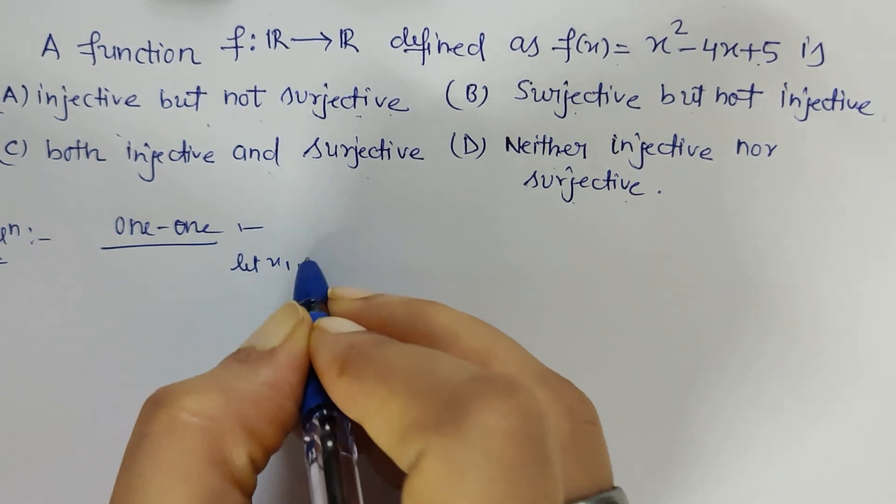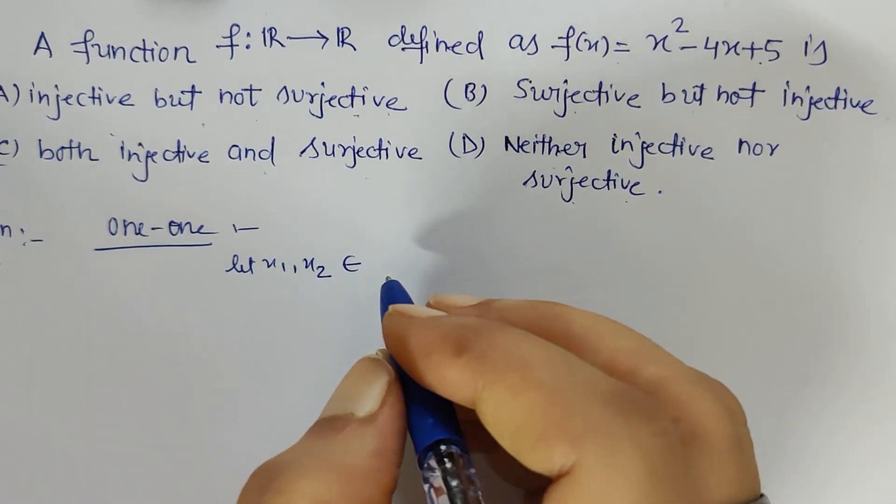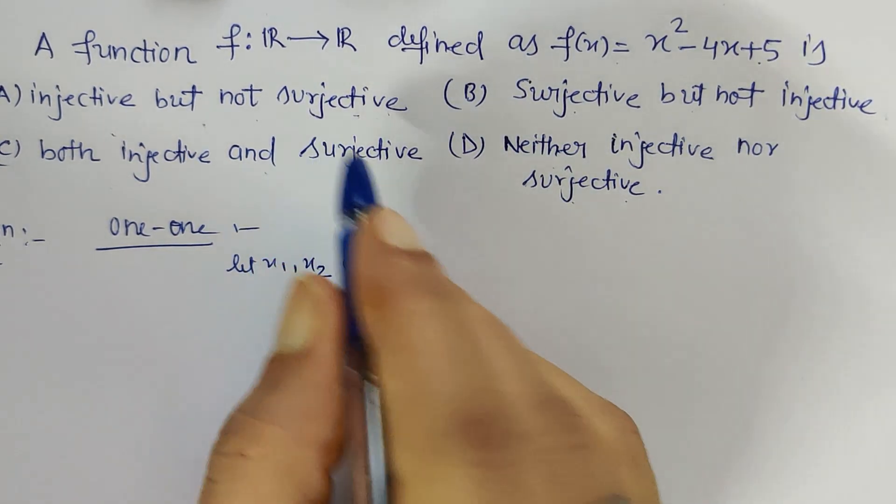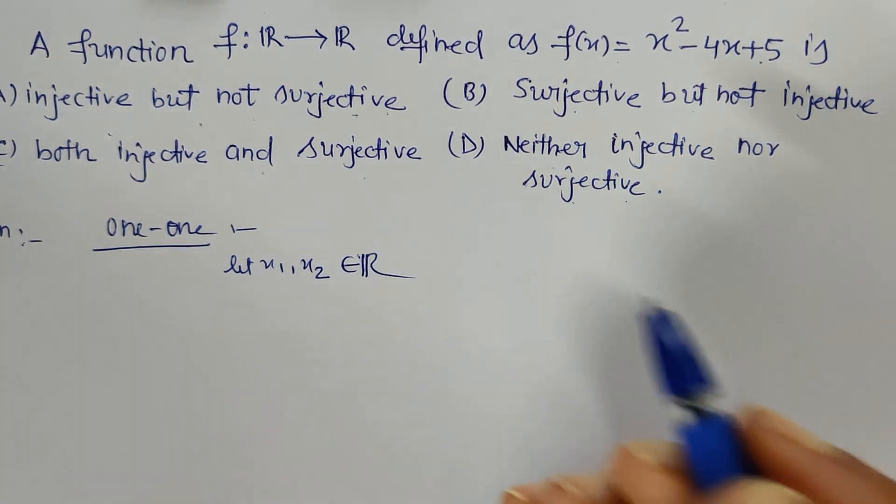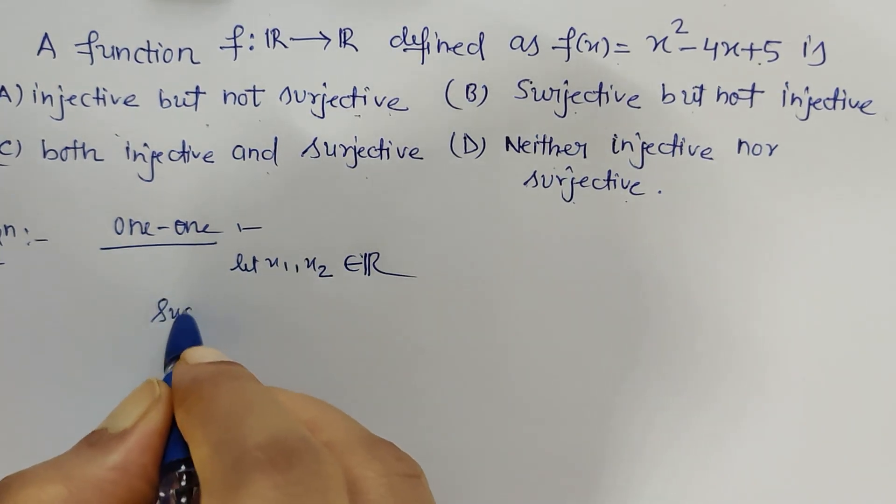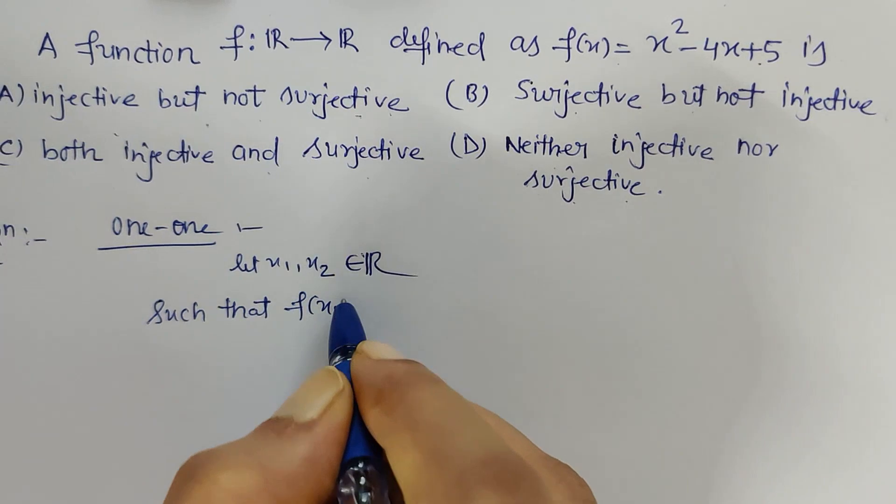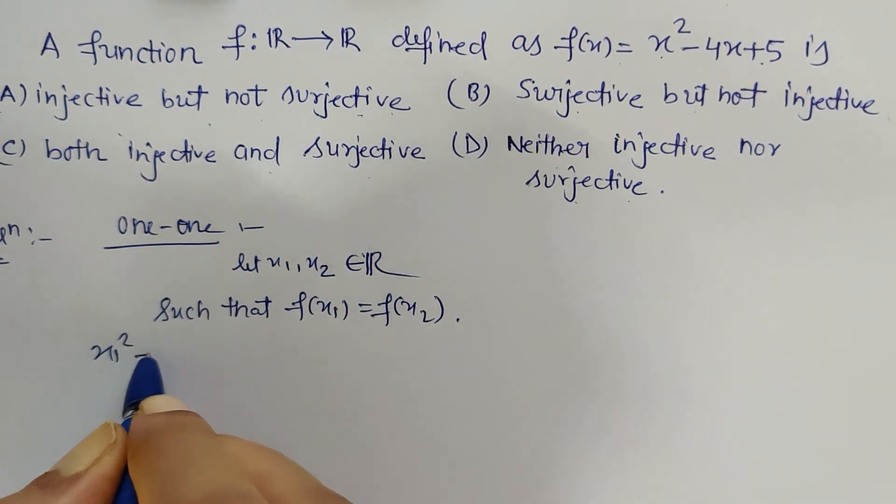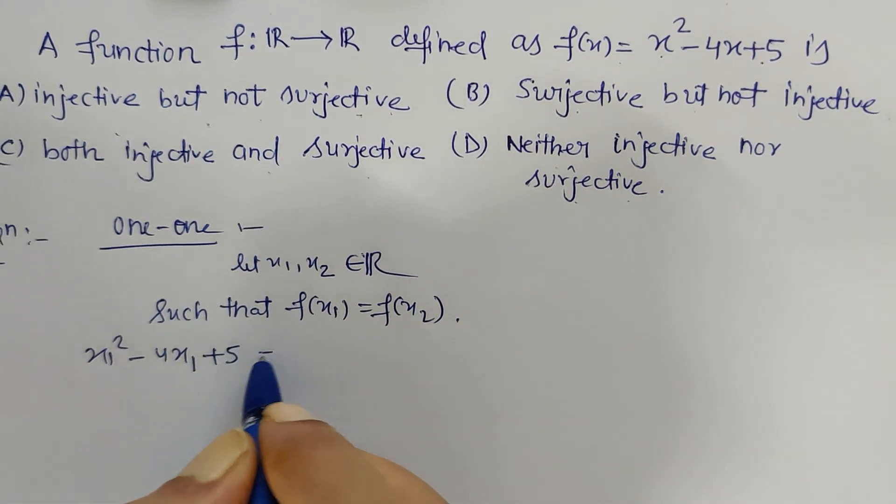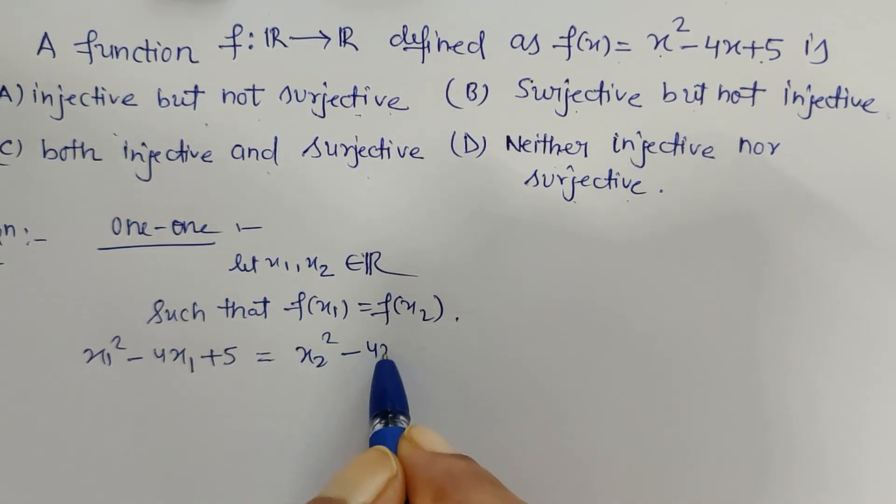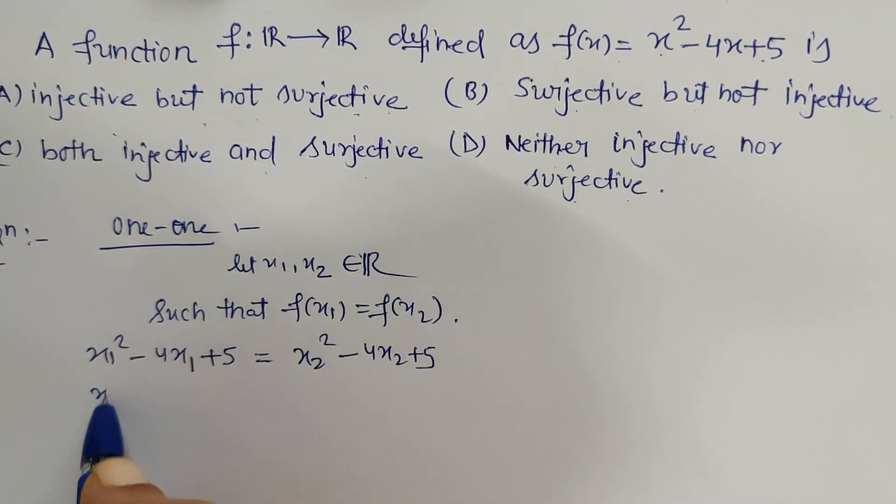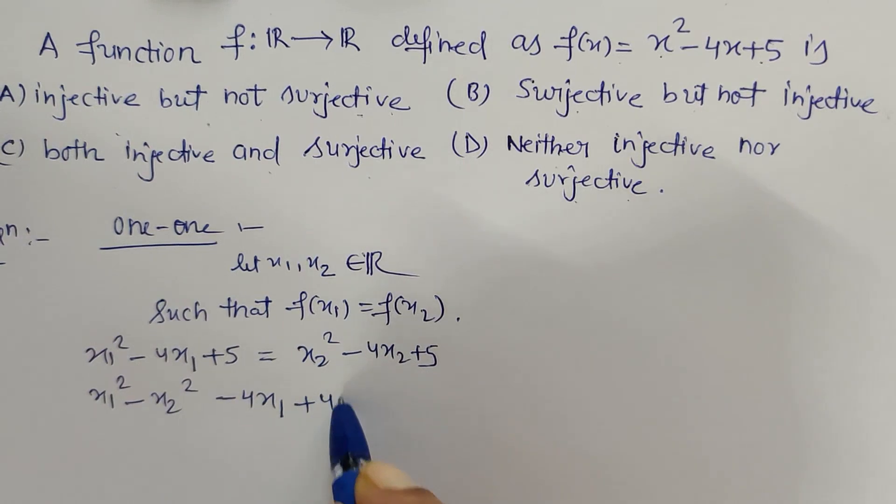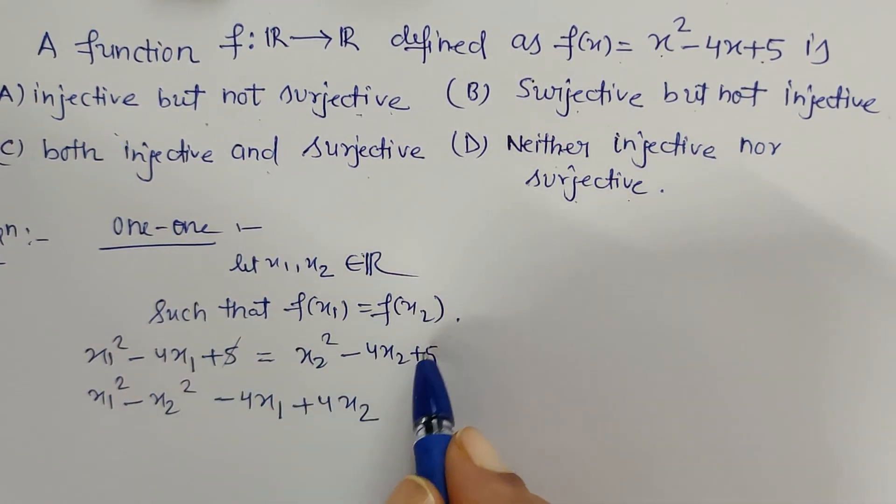For proving one-to-one we have to assume x₁, x₂ belongs to R. You don't have to show all this in exam—they're expecting only the answer, but behind the question this must go through your brain. So, x₁, x₂ belongs to R such that f(x₁) = f(x₂). If I put x₁ in place of x, I get x₁² - 4x₁ + 5 = x₂² - 4x₂ + 5. Let's shift x₂ on the left-hand side: x₁² - x₂² - 4x₁ + 4x₂ = 0.